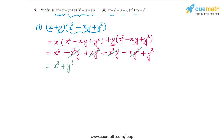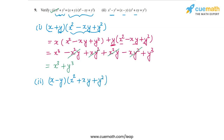That verifies the first identity. Now let's do the second one. Again we will start with the product on the right-hand side, which is (x - y)(x² + xy + y²). We will use the distributive property of multiplication over subtraction. So we have x(x² + xy + y²) minus y(x² + xy + y²).